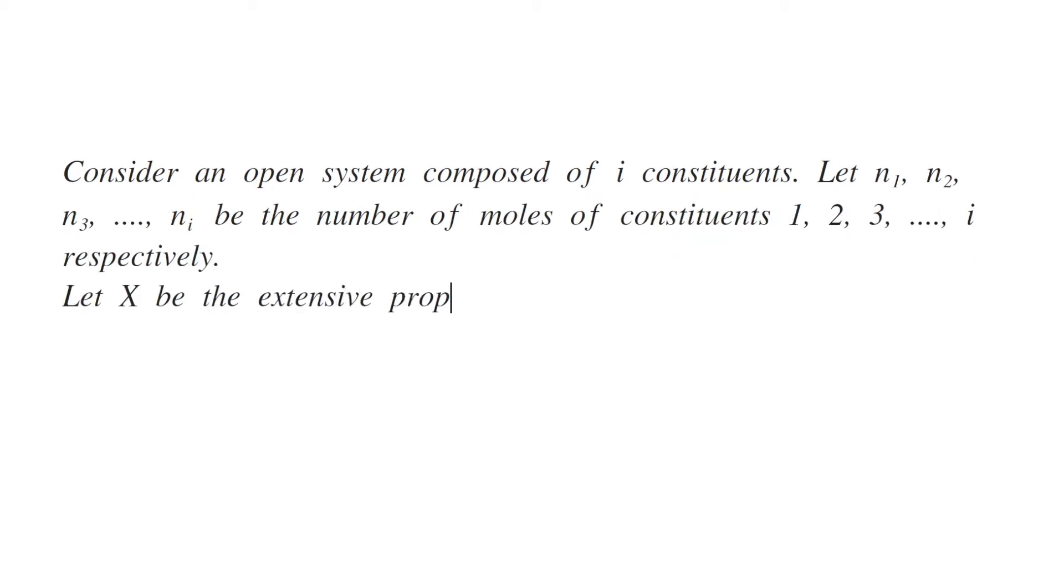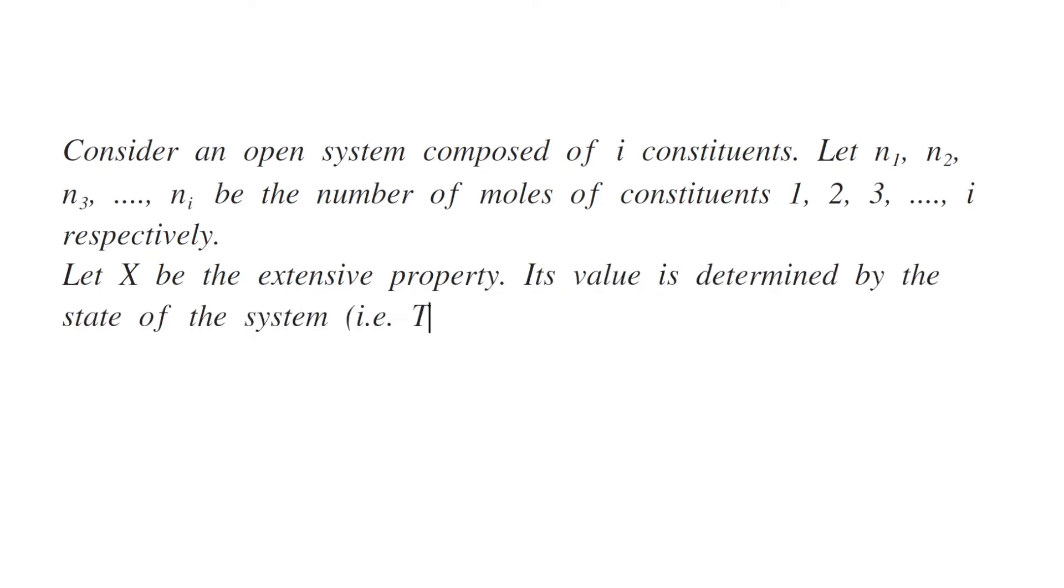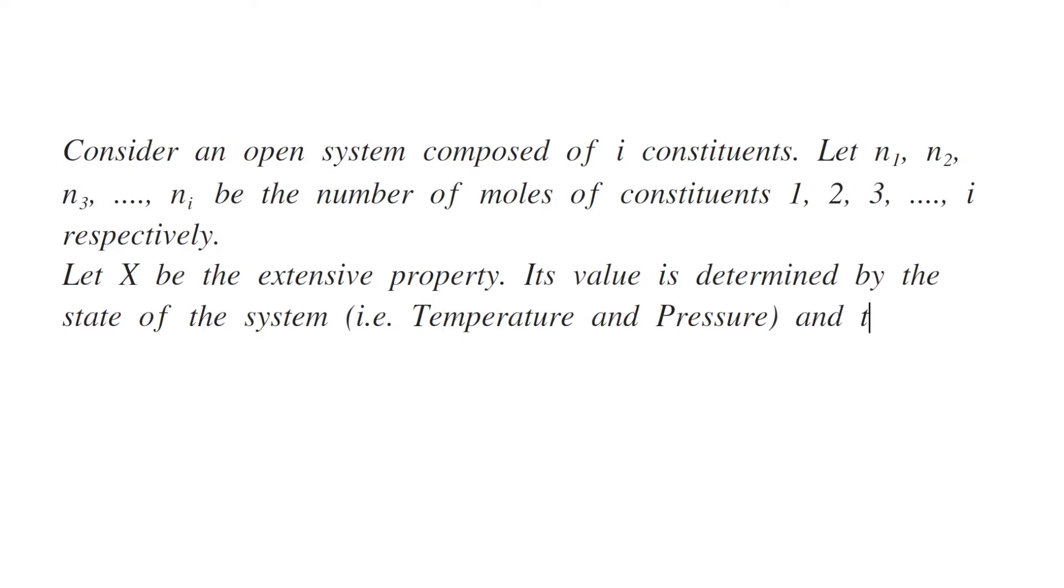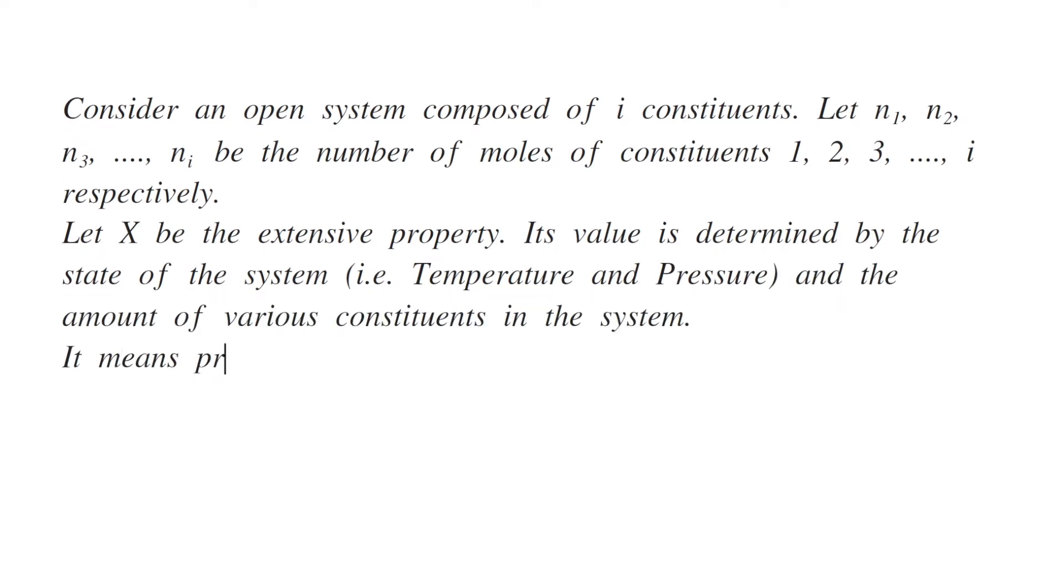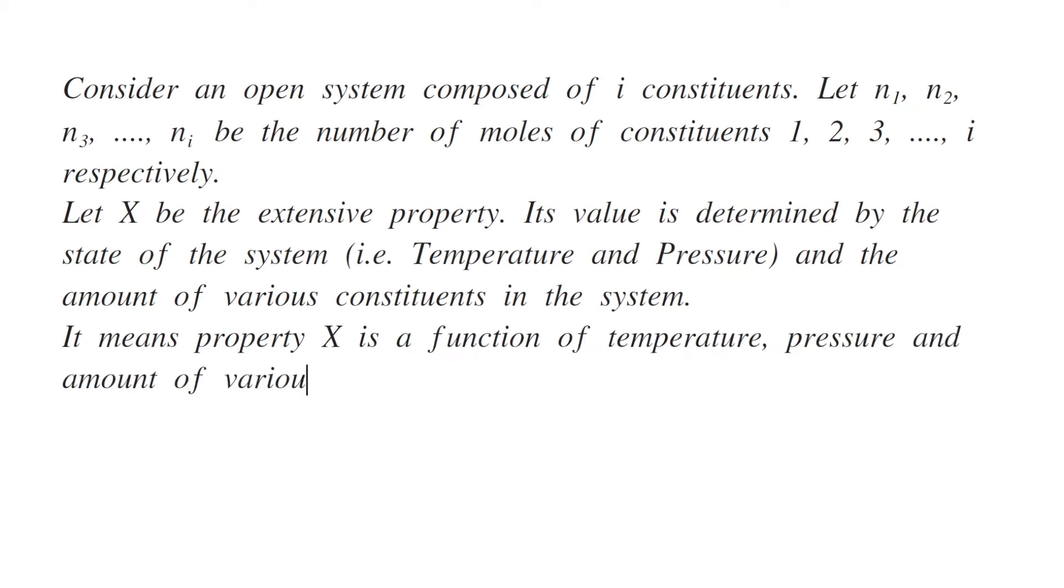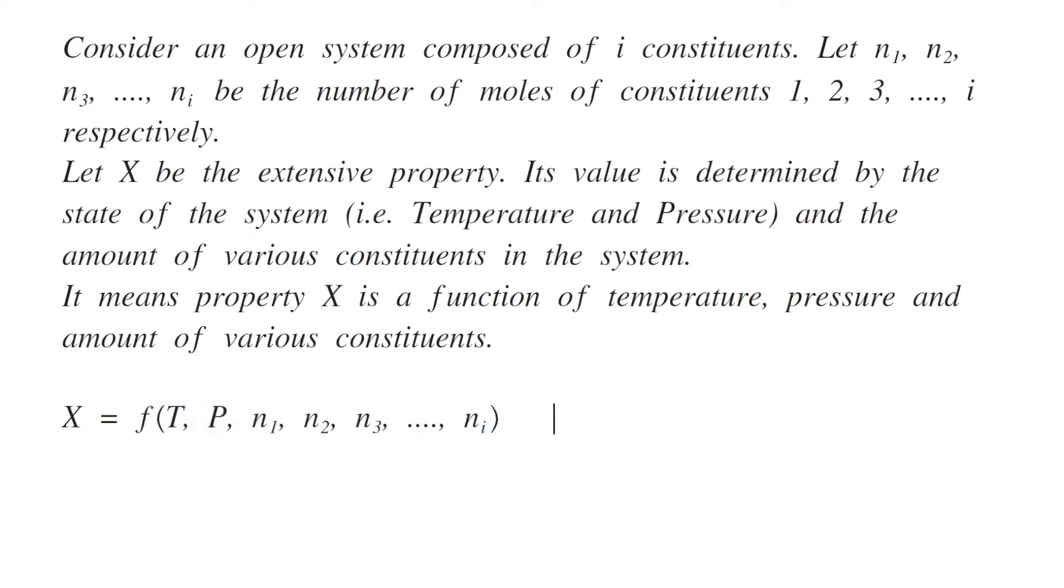Let X be the extensive property. Its value is determined by the state of the system, that is temperature and pressure, and the amount of various constituents in the system. It means property X is a function of temperature, pressure and amount of various constituents. So I can write X equals F of T, P, N1, N2, N3 up to NI. This is equation number 1.